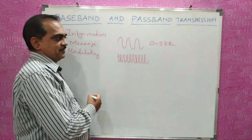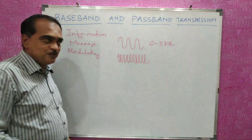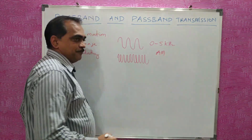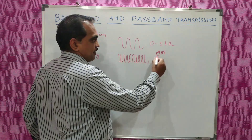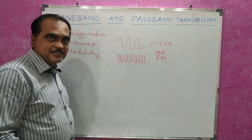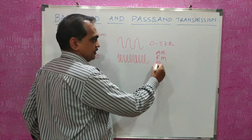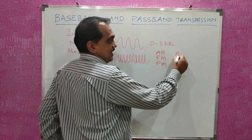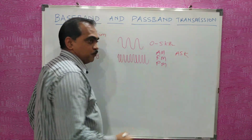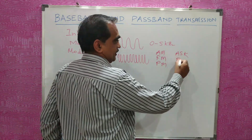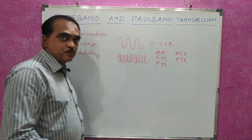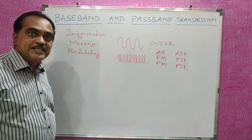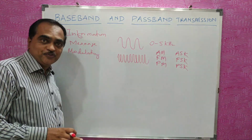In analog communication, if you change the amplitude it is called amplitude modulation; if you change the frequency it is called frequency modulation; if you change the phase it is called phase modulation. Similarly, in digital modulation, if you change the amplitude it is called amplitude shifting; if you change the frequency it is called frequency shifting; if you change the phase it is called phase shifting.